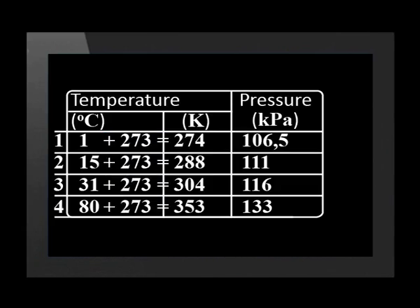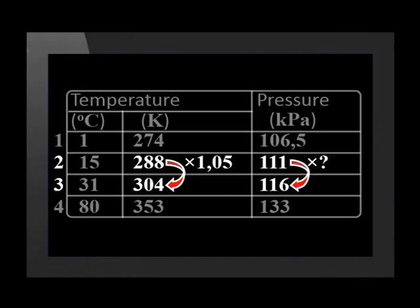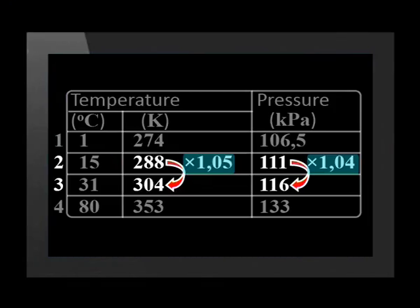Now let's check for direct proportion between temperature in Kelvin and pressure. Let's compare lines 2 and 3: 288 times what gives 304? — 1.05. 1.11 times what equals 1.16? — 1.04. This is not exactly the same as the factor by which Kelvin temperature was increased. Why not? Mr. Mashapa's learners collected this data with real equipment, not from a simulation, so we should expect some experimental error. Let's ignore the slight difference here as experimental error.